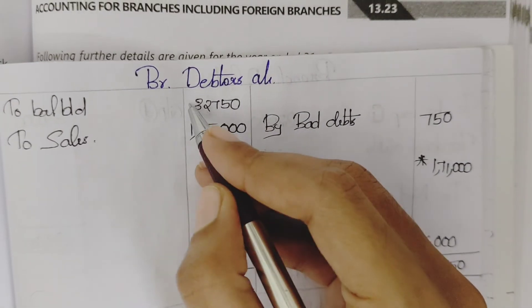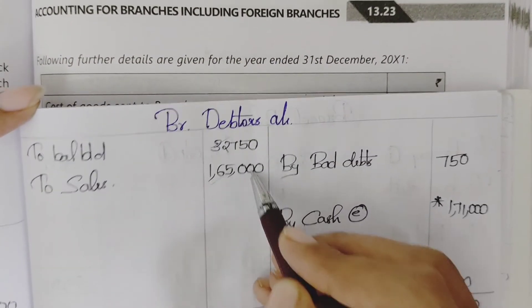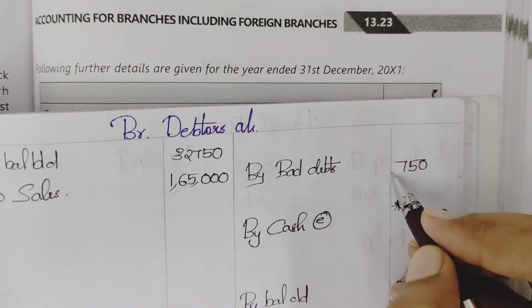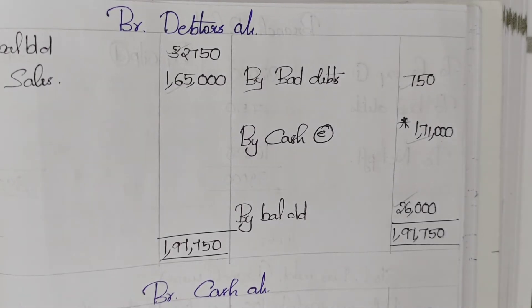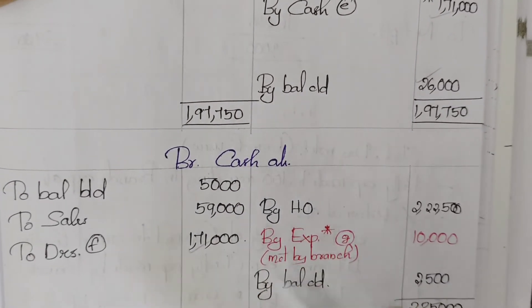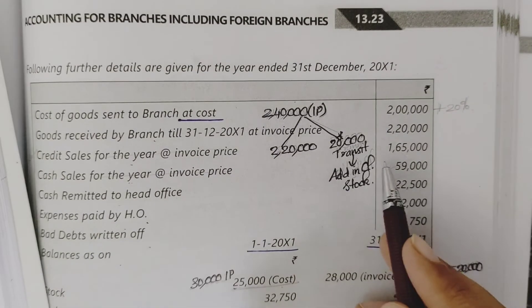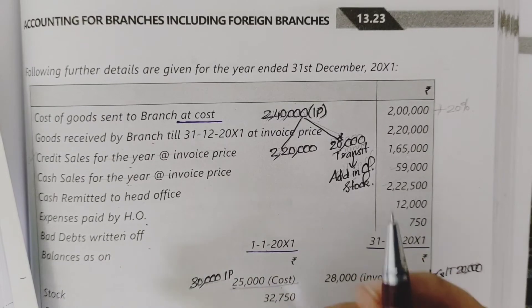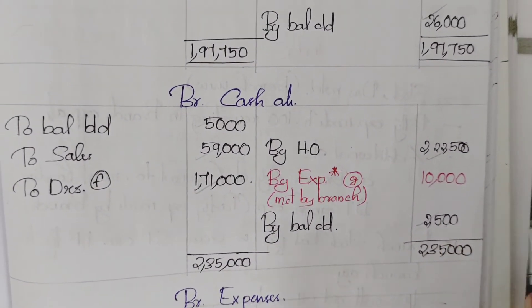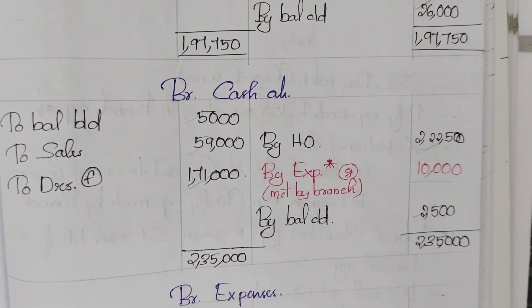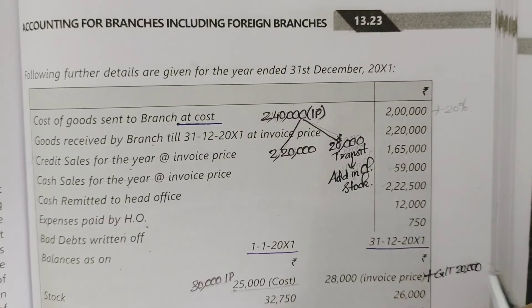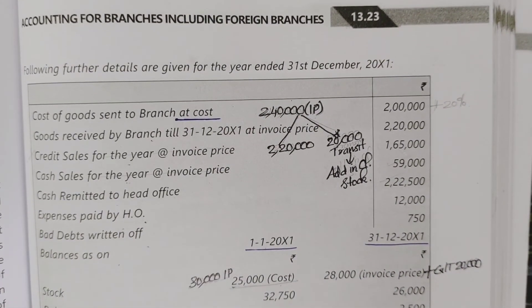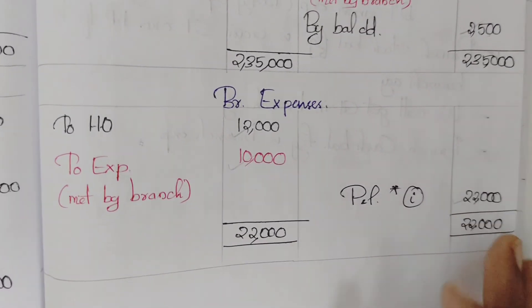Branch debtors account: opening balance, credit sales $1,65,000, bad debts $750, balancing figure $1,71,000 which is cash received from debtors. Then branch cash account: $1,71,000 from debtors, balance brought down and carried down, cash sales $59,000 — journal entry cash account debit to sales $59,000. Cash remitted to head office: journal entry head office account debit to cash $2,20,500. Balancing figure $10,000 is expenses met by the branch — transferred to expense account. Expenses paid by head office: expense account debit to head office $12,000. P&L account balancing figure: $22,000.